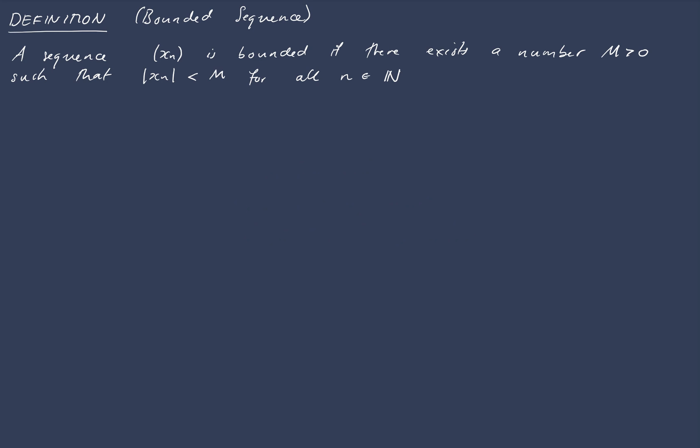Well first off we'll just express the absolute value of xn being less than m in its full form. Obviously we know that's equivalent to negative m being less than xn being less than m. So if we were to draw our sequence on the number line here, so here are natural numbers along here, 1, 2, 3, etc.